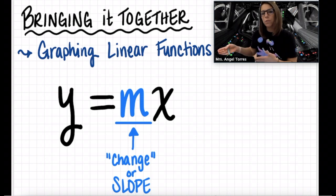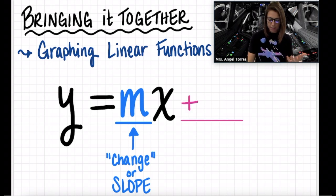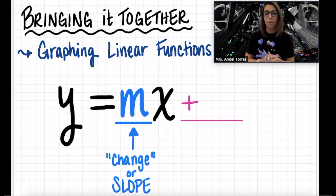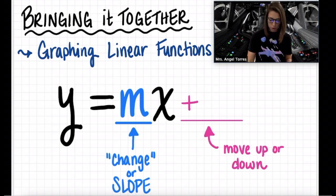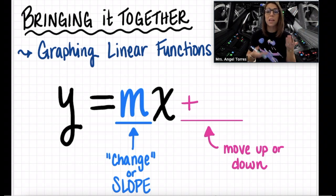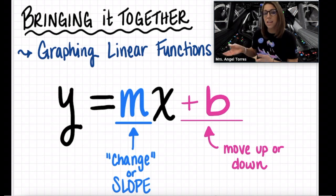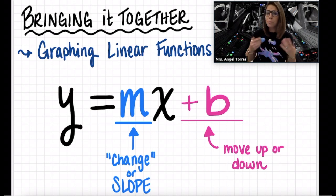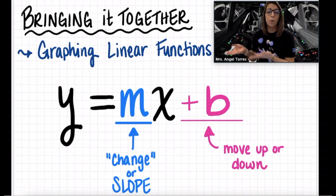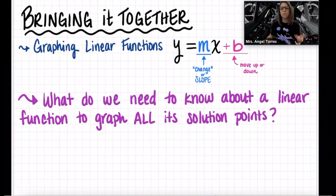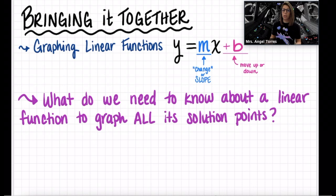Then we started adding a value onto the end of our equation, onto the end of our function. This value was moving our graph up and down, moving our starting point. We're going to call that b — b stands for our starting point. With that little review, I want to ask you one leading question: what do we need to know about a linear function to graph all of its solution points?